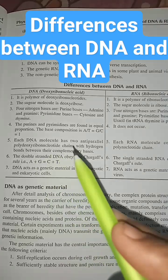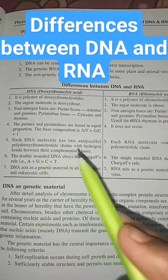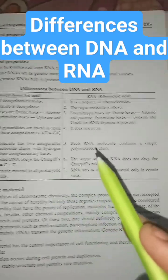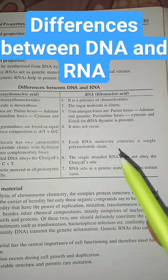Each DNA molecule has two antiparallel polydeoxyribonucleotide chains with hydrogen bonds between their complementary bases. Each RNA molecule contains a single polynucleotide chain.